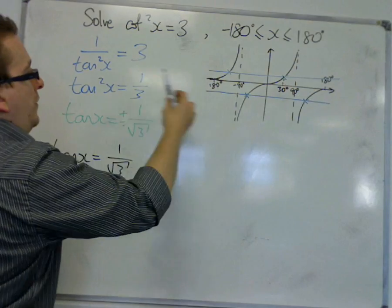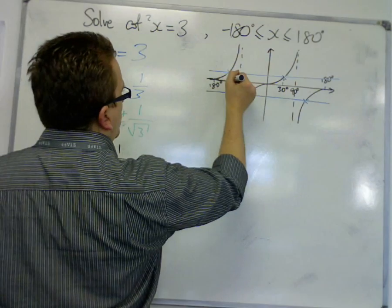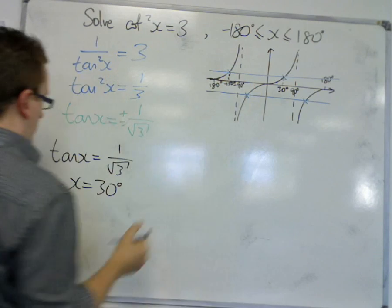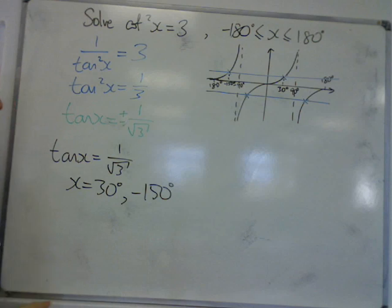So if I take 180 away from that, then that's minus 150, which will be that solution. So x is equal to 30 degrees or minus 150 degrees.